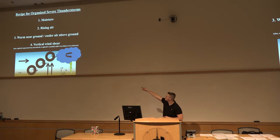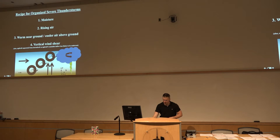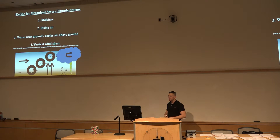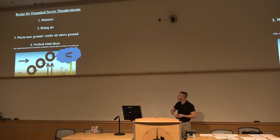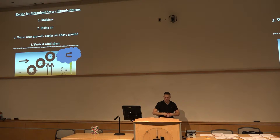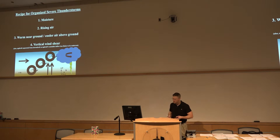That separation is critical for the sustenance and organization of storms, while also allowing the horizontal vorticity offered by vertical shear to be tilted into the vertical. Eventually, as seen in this conceptual model, we get vertical vorticity associated with a rotating updraft. We'll talk about all the processes that give rise to supercells and convective mode later in this class.